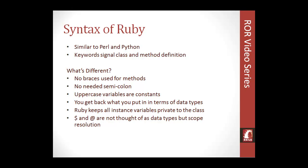The syntax of Ruby, as I said, is similar to Perl and Python. Keywords in Ruby signal class and method definition. A prominent difference from other languages: when you declare a method, you can't use curly braces. Instead you use the keyword 'def' — D-E-F for define — then the method name, then all the content in between, and at the end you use 'end' — E-N-D — instead of a closing curly brace. Also, you don't need a semicolon at the end of statements; Ruby uses a line break to signal the end of a statement.